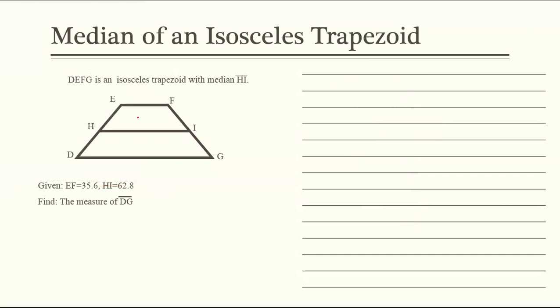Next. NOPQ is an isosceles trapezoid with median at RS. Given EF is 35.6, HI is 62.8 or yung lower base natin. HI is the median. Binigay naman po yung median. Find the measure of DG. So we're still going to use the formula na B1 plus B2 over 2 is equal to M. Dito, binigay yung sukat ng M. So magiging 62.8 is equal to 35.6 plus B2 over 2. Para masolve natin, i-multiply mo to. Cross multiply lang yan.